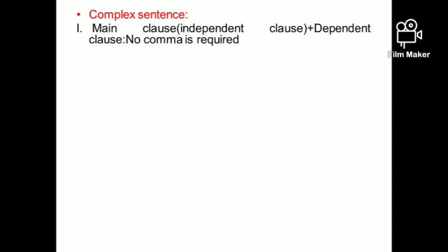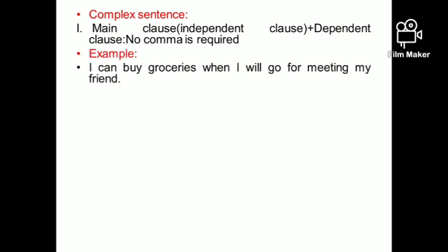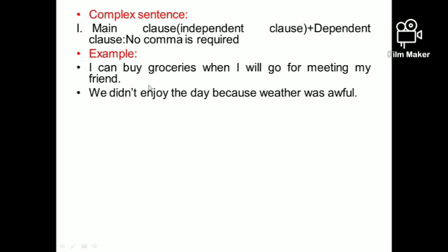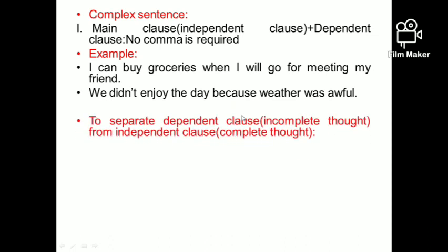Next, uses of comma in complex sentences. In the first structure — main clause plus dependent clause (independent + dependent) — we do NOT use a comma. An independent clause is a complete thought; a dependent clause is an incomplete thought. For example: 'I can buy groceries when I'll go for meeting my friend.' 'I can buy groceries' is independent; 'when I'll go for meeting my friend' is dependent. When using independent + dependent order, no comma is needed. Similarly: 'We enjoyed the day because weather was awful' — no comma required.